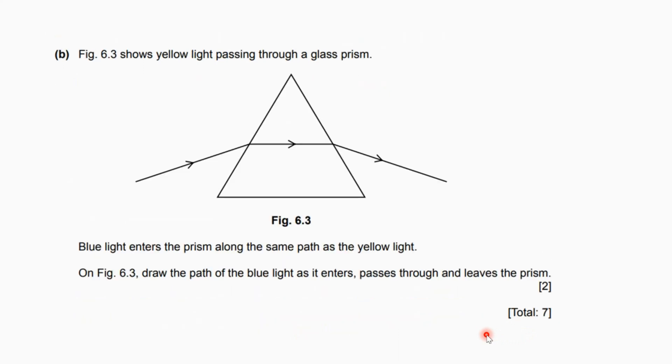For part b, figure 6.3 shows yellow light passing through the glass prism. Blue light enters the prism along the same path as the yellow light. On figure 6.3, we are going to draw the path of the blue light as it enters and passes through and leaves the prism.